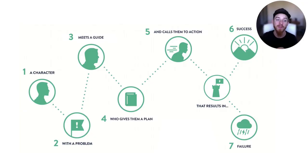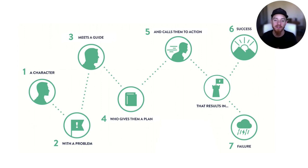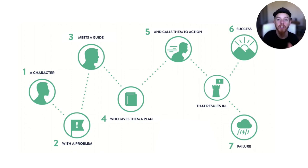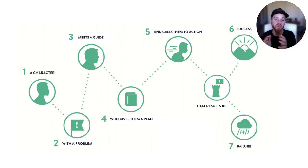There's a book you should read called StoryBrand — the SB7 framework by Donald Miller. Once you have your archetype and everything dialed in, this is where you put it into action. One key point: you are not the hero of the story — you are the guide. Your client or customer is the character. They have a problem, and you need to identify what that problem is. You're the guide helping them solve it.